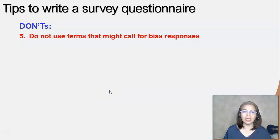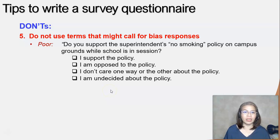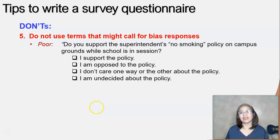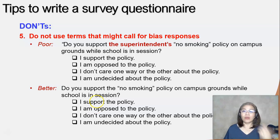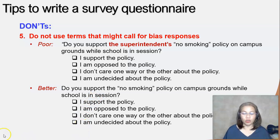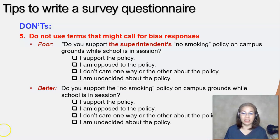Do not use terms that might call for biased responses. For example: 'Do you support the superintendent's no-smoking policy on campus grounds while school is in session?' — if the respondent has a poor relationship with the superintendent, this biases their answer. Corrected: 'Do you support the no-smoking policy on campus grounds while school is in session?' then provide the choices. Removing the reference to who implemented the policy keeps the question neutral and unbiased.